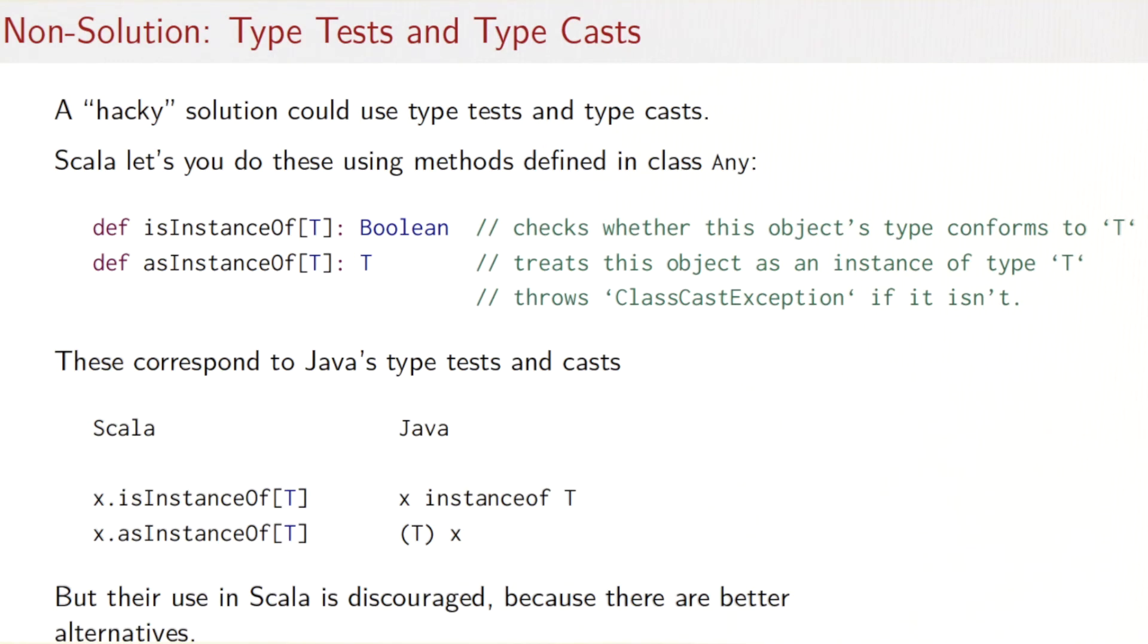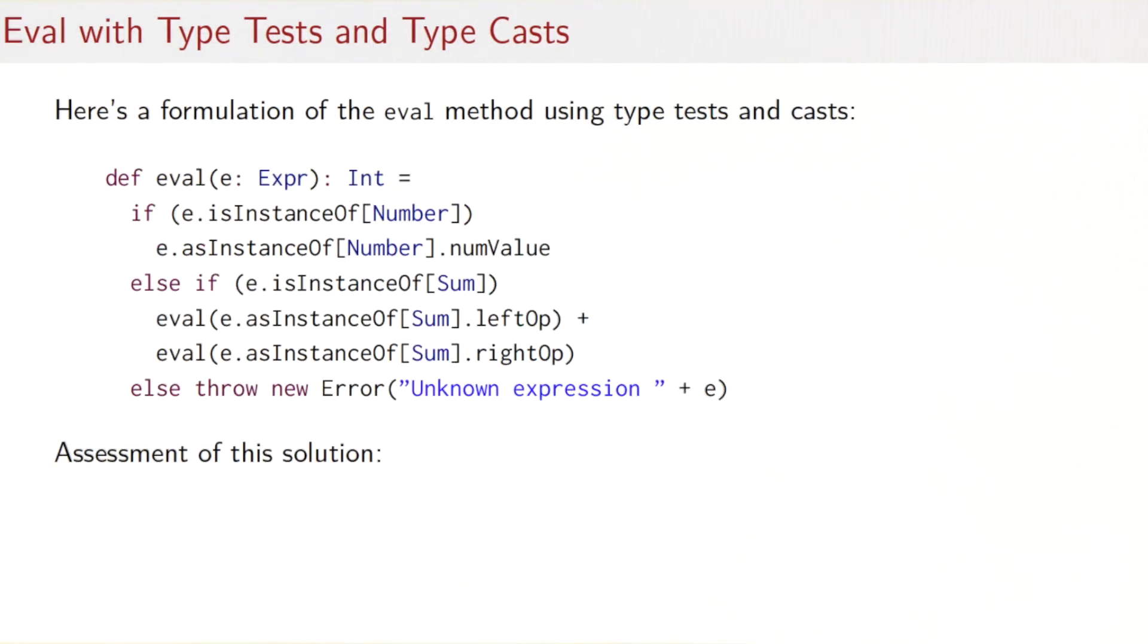So using type tests and type casts, we could do something like that for eval. We could say, okay, we have a class expression, and now we don't need to put anything special inside expression. And we would simply ask, is the expression an instance of my Number class? Then we cast it to Number in that case, and we pull out the numValue from the number. On the other hand, if the expression is an instance of Sum, then we take the left operand after casting it to sum, take the right operand after casting it to sum, and evaluate both operands, finally sum the results. And the third part would be as before. If it's neither, then we throw an error.